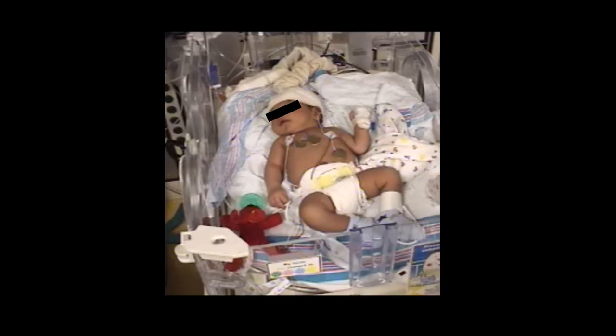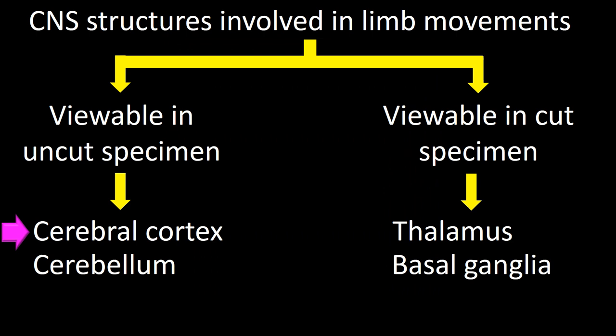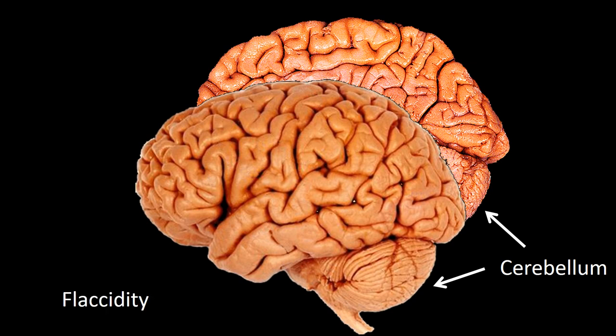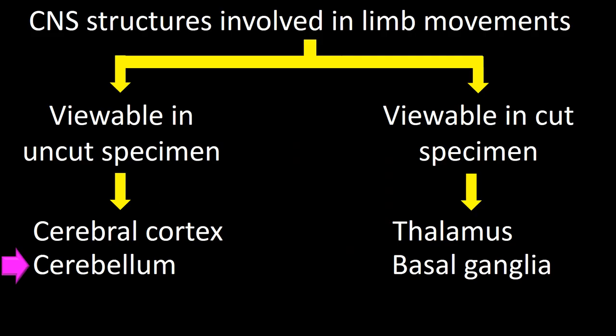Epileptiform activity in these areas was the cause of myoclonus in one patient. Regarding the cerebellum in relation to abnormal movements: most of the time, cerebellar involvement produces flaccidity, but intentional tremor — also called terminal tremor — may also occur.